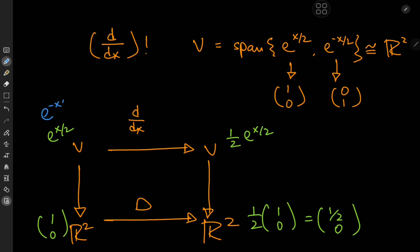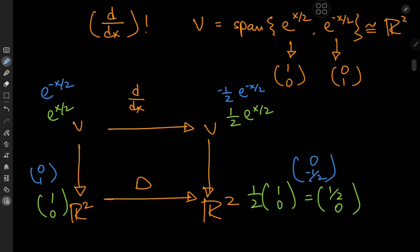Now for the other basis vector e to the negative x by 2, we have negative 1 half e to the negative x by 2. And this is of course the basis vector 0, 1. And this of course translates to 0, negative 1 half over here.